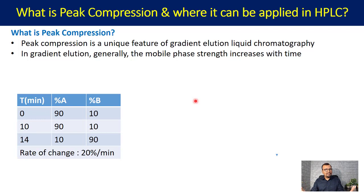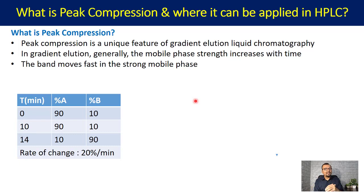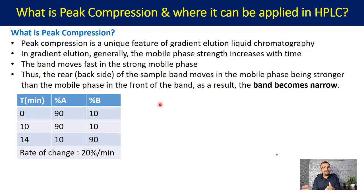As the proportion of organic solvent increases, at 14 minutes our mobile phase is much stronger compared to the mobile phase at 0 or 10 minutes. The band moves faster in a strong mobile phase — once the sample is injected onto the column, it forms a band, and that band moves faster with a stronger mobile phase than with a weaker one. Thus, the rear side of the sample band moves in a mobile phase that is stronger than the mobile phase at the front of the band, and as a result our band becomes narrower — peak compression takes place.